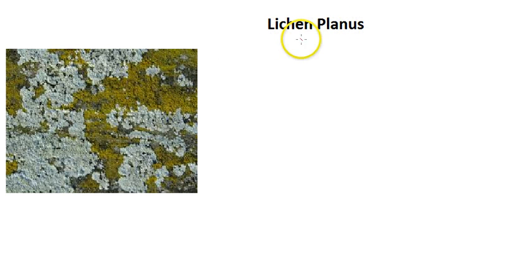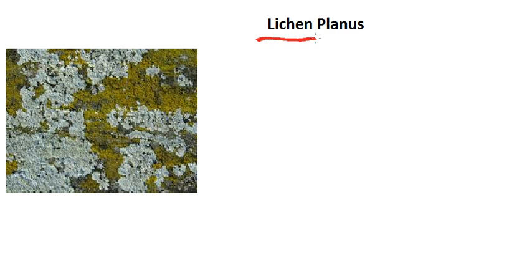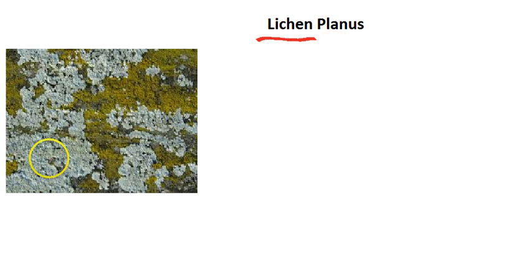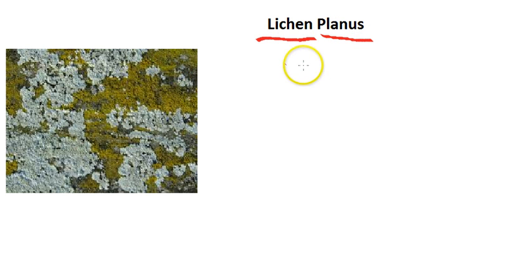So let's break down the word. What does lichen and planus mean? Lichen is basically a compound organism consisting of a fungus. On the left you see this picture — the fungus is kind of flat. So that's what planus means: fungus-looking and flat lesions.